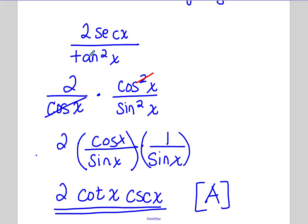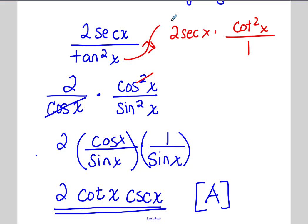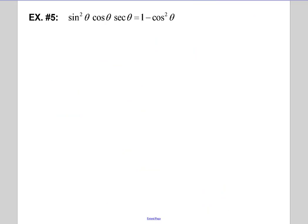Just in case that was confusing: I was thinking of 2 times secant and cotangent, moving secant to cosine in the bottom and cotangent on top for the tangent. That's how I got to that step. So that's example 4.